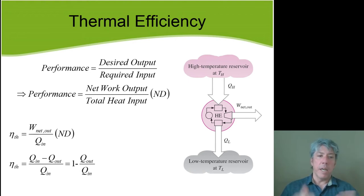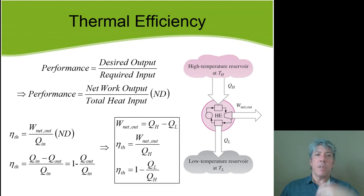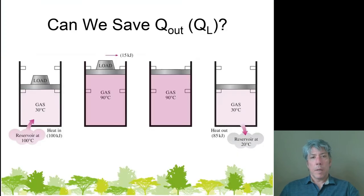So thermal efficiency can be written as the network output over total heat input or 1 minus Q_L over Q_H, where Q_L over Q_H is the ratio of the heat flows across the engine.